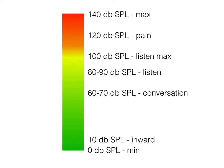Recommended levels for music listening and mixing are usually 80 to 90 dBSPL. Conversational speech is 60 to 70 dBSPL. Below 10 dBSPL, our hearing will turn inward, causing us to hear our own heartbeat and breath.